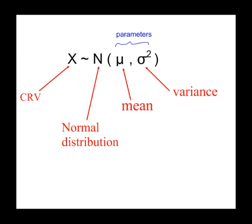You can summarise a normal distribution like this. And you've come across something like this already for the binomial distribution. This is the continuous random variable which follows a normal distribution. And there are two parameters here that define the normal distribution: the population mean and variance.